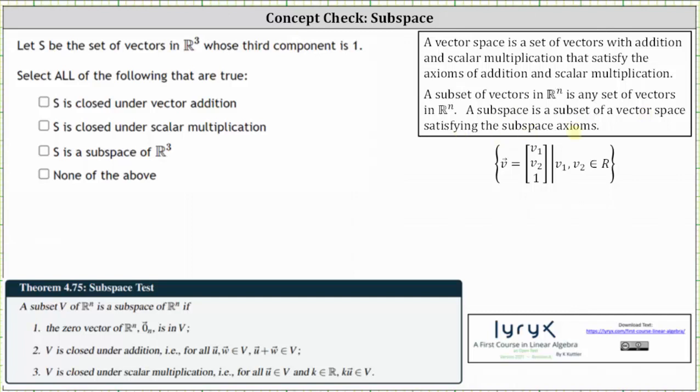For this question, we're asked to check all the following that are true. First, S is closed under vector addition. To check this, we need to sum any two vectors in the subset S and see if the sum is also in the subset S.